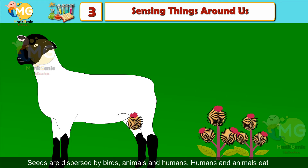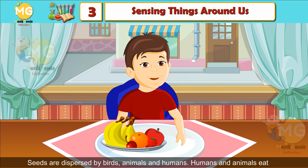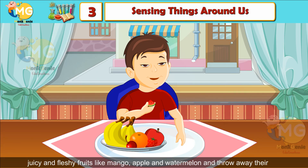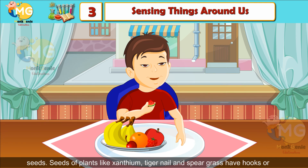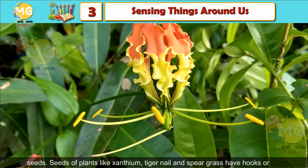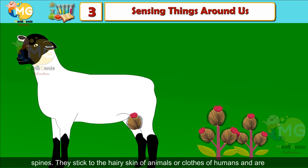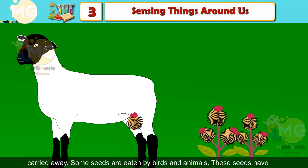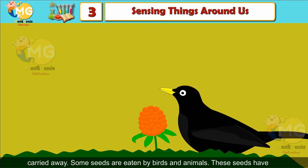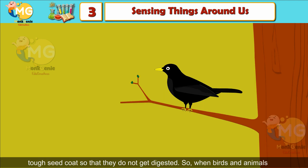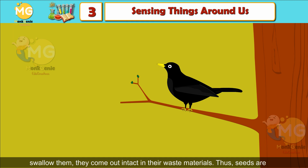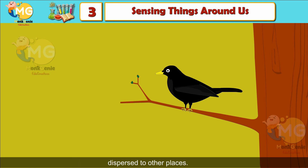Animals: seeds are dispersed by birds, animals, and humans. Humans and animals eat juicy and fleshy fruits like mango, apple, and watermelon and throw away their seeds. Seeds of plants like xanthium, tiger nail, and spear grass have hooks or spines that stick to the hairy skin of animals or clothes of humans and are carried away. Some seeds are eaten by birds and animals; these seeds have tough seed coats so they do not get digested and come out intact in waste materials.